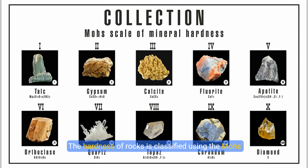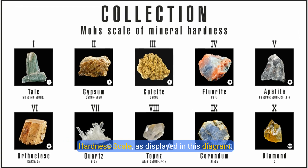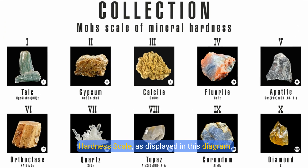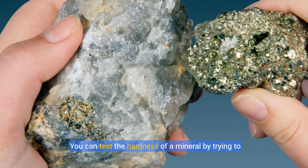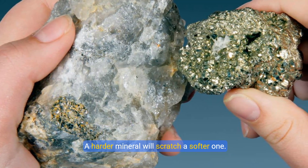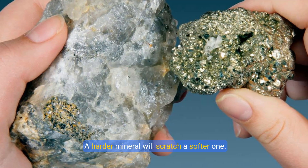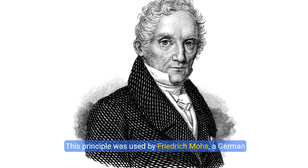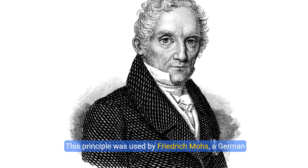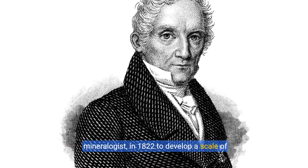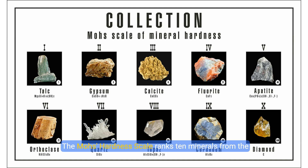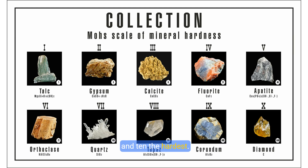The hardness of rocks is classified using the Mohs hardness scale, as displayed in this diagram. You can test the hardness of a mineral by trying to scratch it with another mineral. A harder mineral will scratch a softer one. This principle was used by Friedrich Mohs, a German mineralogist in 1822, to develop a scale of hardness. The Mohs hardness scale ranks ten minerals from the softest to the hardest, with one being the softest and ten the hardest.